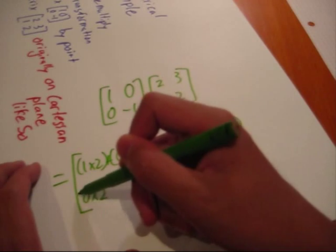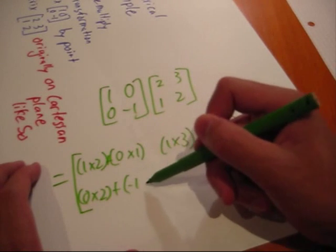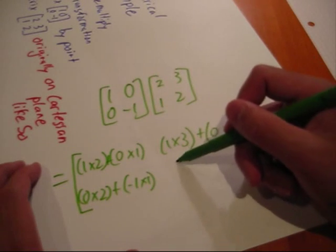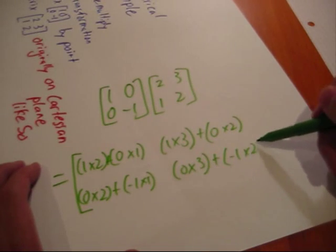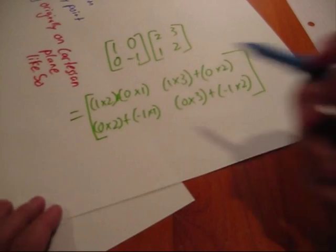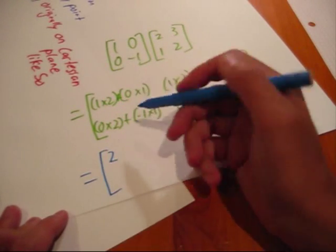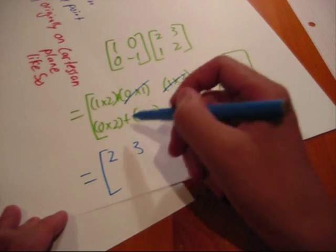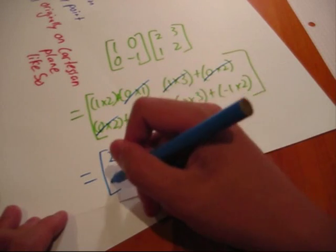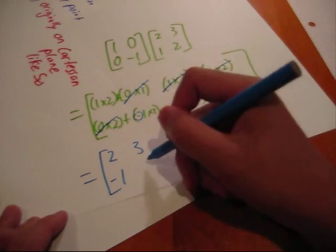And 0 times 2 plus minus 1 times 1, 0 times 3 plus minus 1 times 2. Now, that equals 2, 3, minus 1, and minus 2.